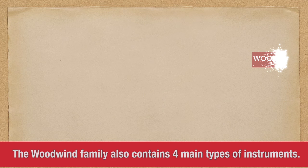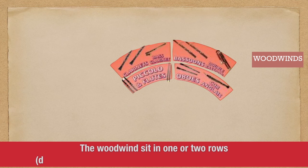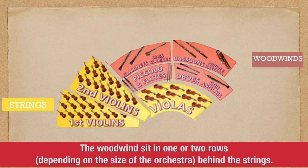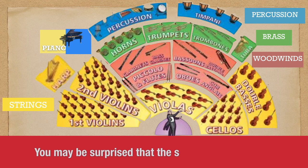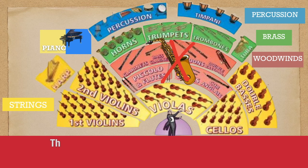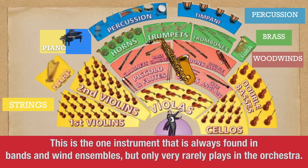The Woodwind Family also contains four main types of instruments. Those are the flute, oboe, clarinet, and the bassoon. The woodwinds sit in one or two rows depending on the size of the orchestra, behind the strings. You may be surprised that the saxophone is not here. This is one instrument that is always found in bands and wind ensembles, but only very rarely placed in the orchestra.